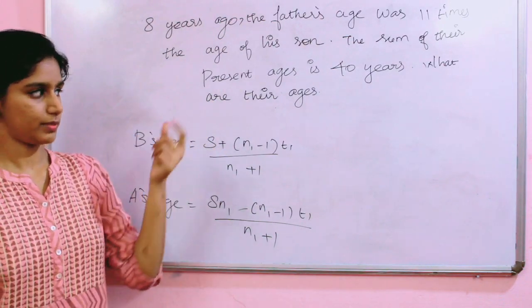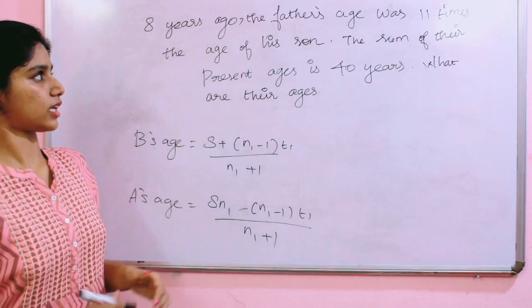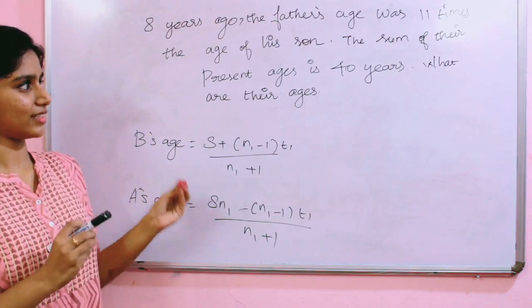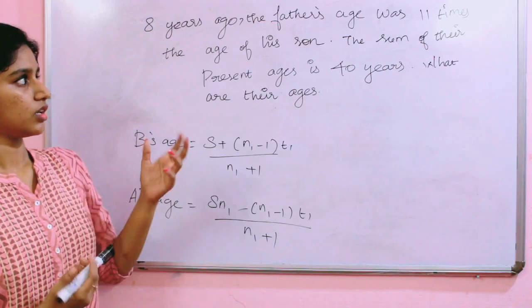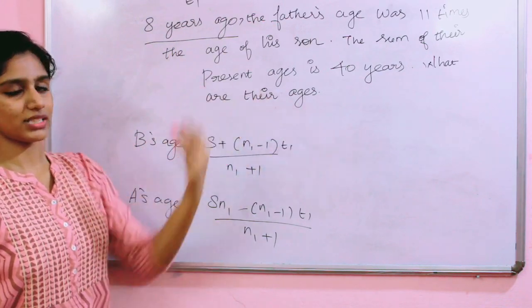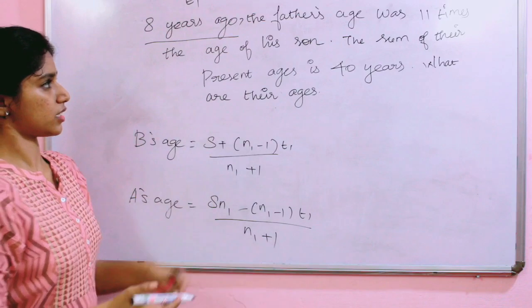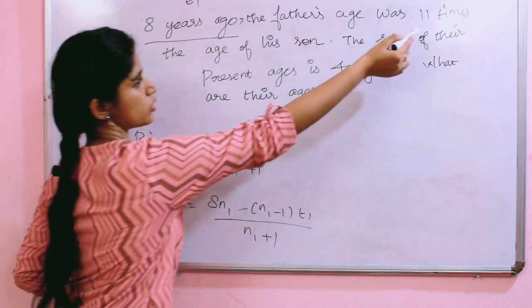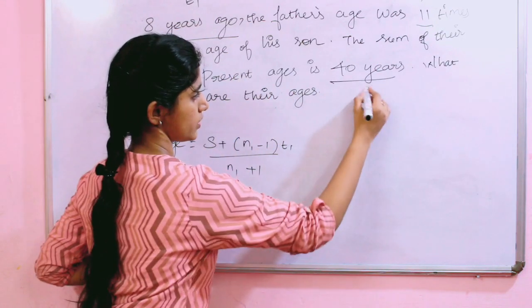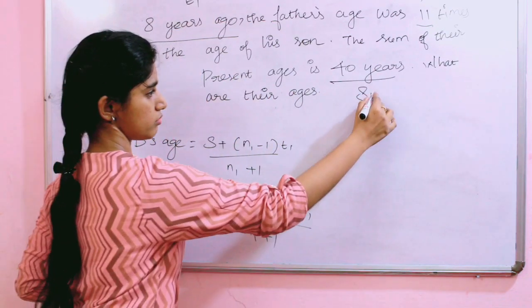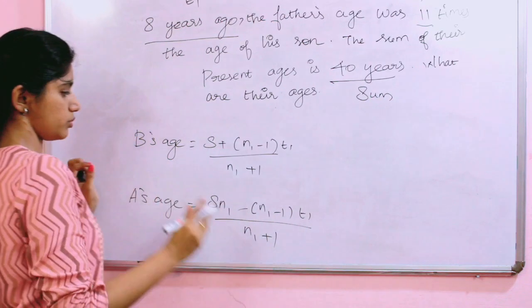8 years ago, the father's age was 11 times the age of his son. The sum of their present ages is 40 years. What are their ages? In the past, 8 years ago, 11 times. That will be N1. And the present age sum is 40 years.